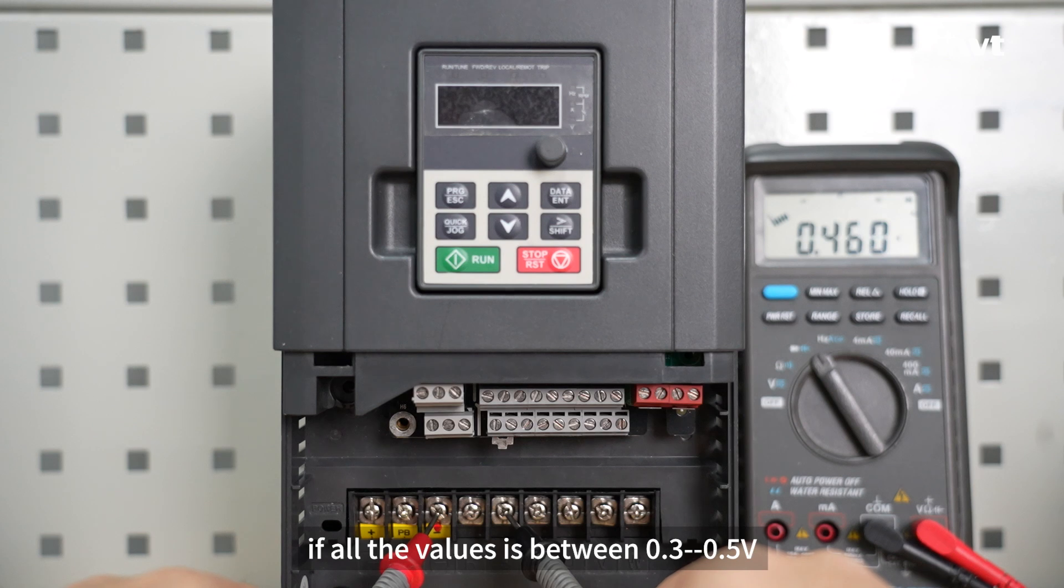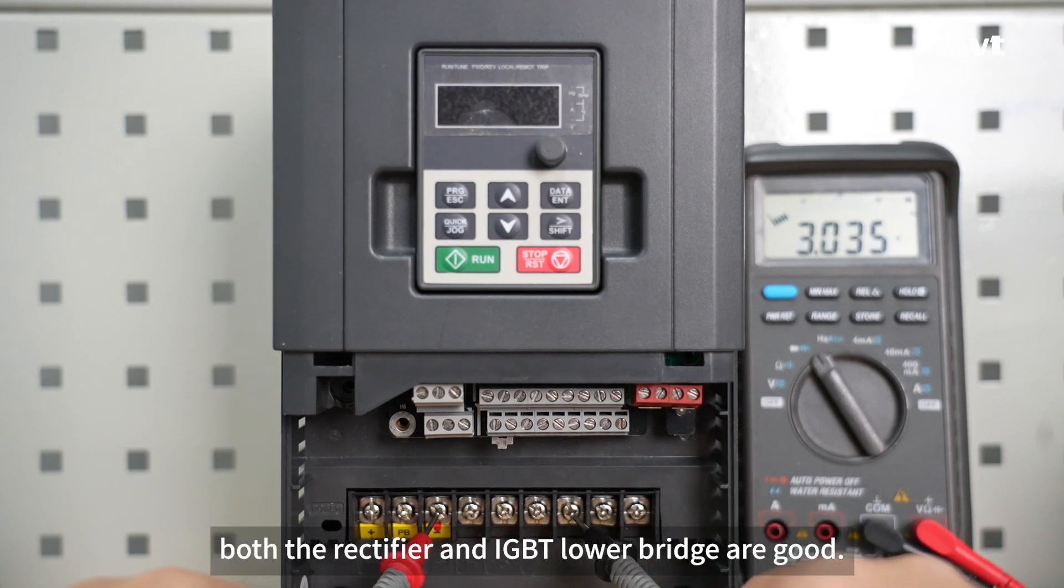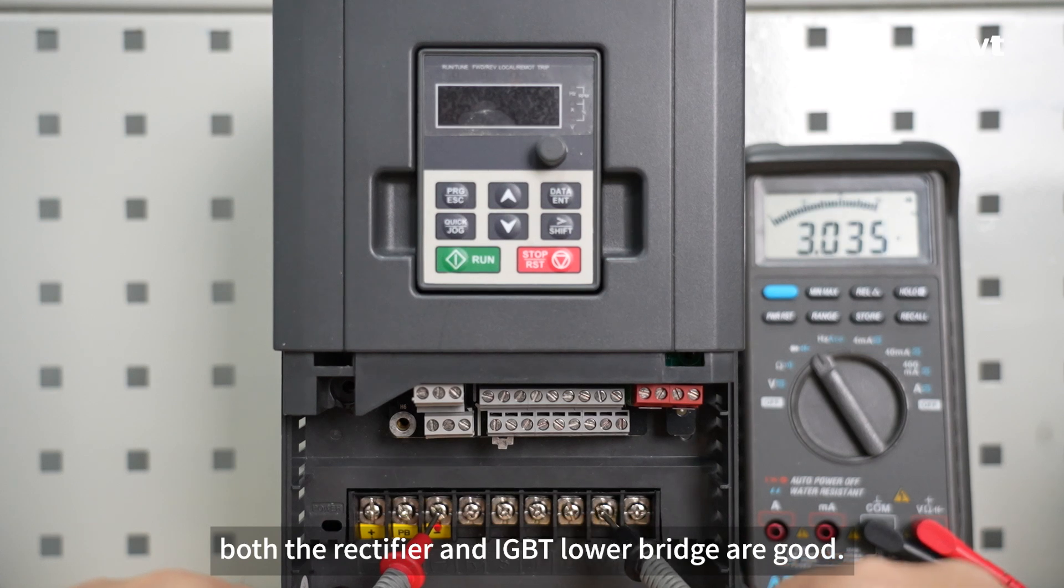If all the values are between 0.3 to 0.5 volts, both the rectifier and IGBT lower bridge are good.